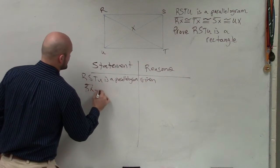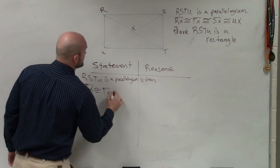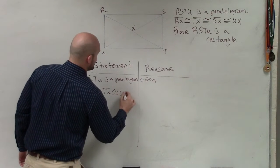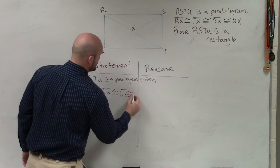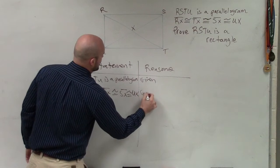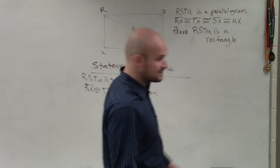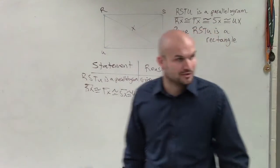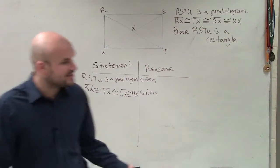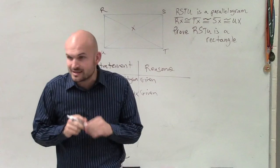We also know that RX is congruent to TX, which is congruent to SX, which is congruent to UX. That's also given. Everybody should have that written on their homework, because it really doesn't take any mental processes to write that down. There's nothing else to know there.